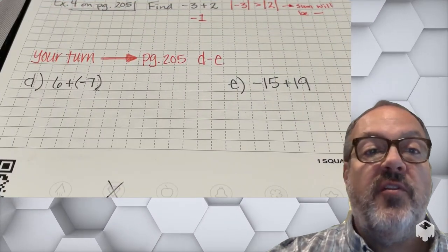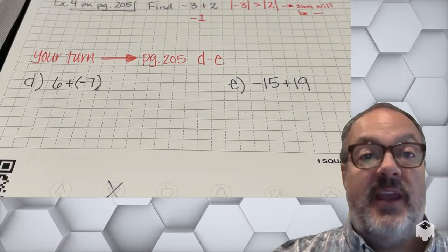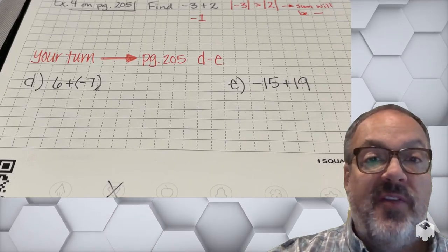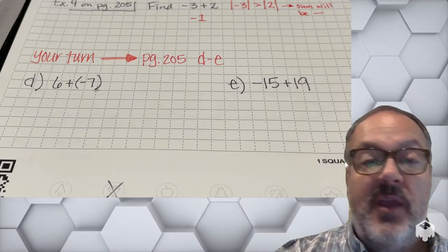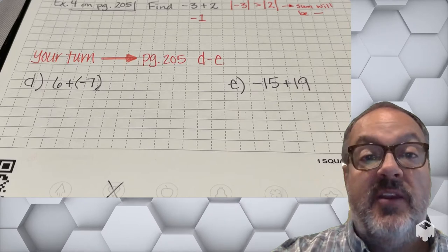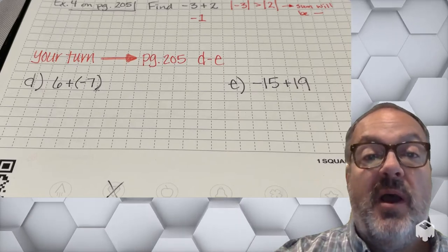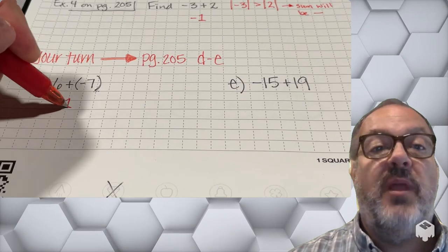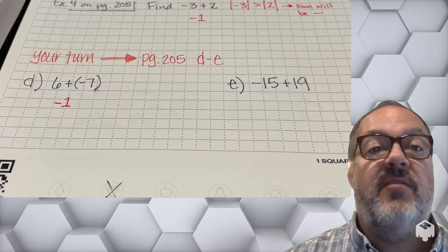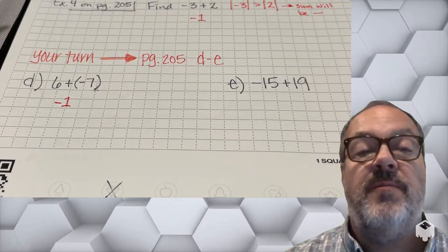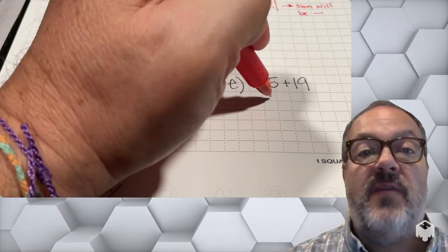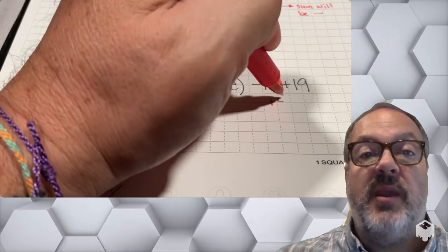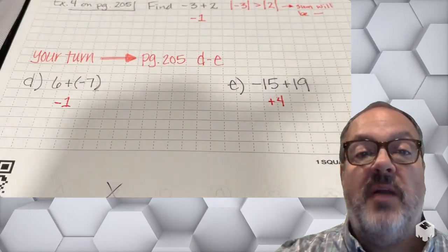Now it's your turn to do problems D and E on page 205. Pause the video here, solve these, then hit play and check your work with mine. 6 plus negative 7 is negative 1. And negative 15 plus 19 is going to be positive 4.